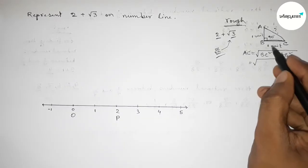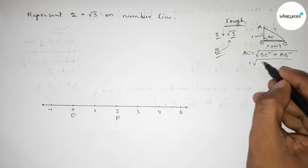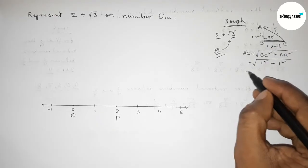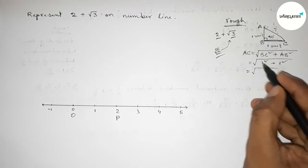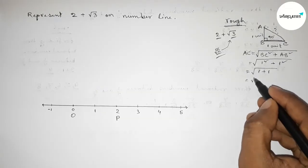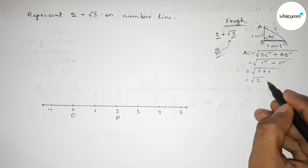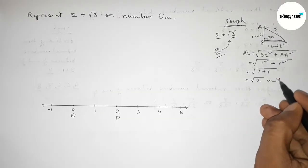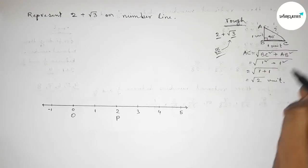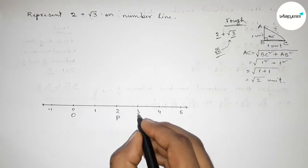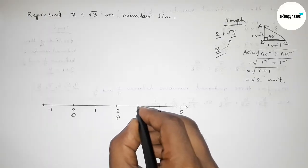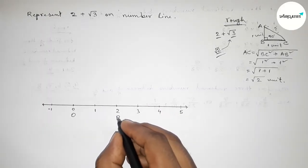So AC equals root over 1 squared plus 1 squared, which equals root of 1 plus 1, so AC equals root 2 units. Now applying this concept on the number line, between 2 and 3.